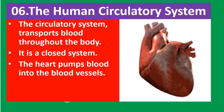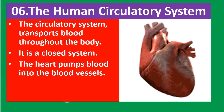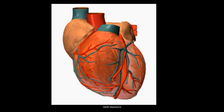The circulatory system transports blood throughout the body. This system is a closed system because blood flows through vessels. The heart pumps blood into the blood vessels. There is a blood supply to the heart — the coronary artery takes blood to the heart muscles, and the coronary vein carries blood away from the heart muscles.